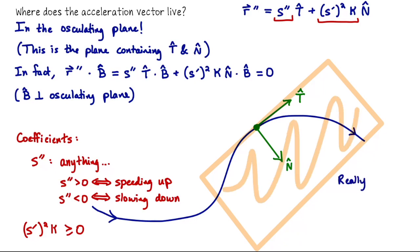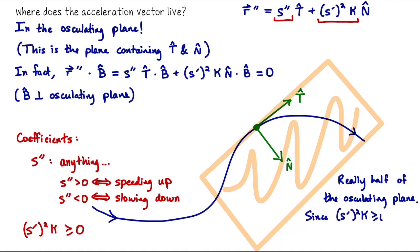The acceleration vector doesn't just live in the osculating plane — it lives in half of the osculating plane. Since (s′)²·κ ≥ 0, the acceleration always points at least partially into the bend. You could have acceleration pointing forward and inward, or backward and inward, or parallel to T or N. But it can never point outward beyond N — the angle it forms with N can't exceed 90 degrees.